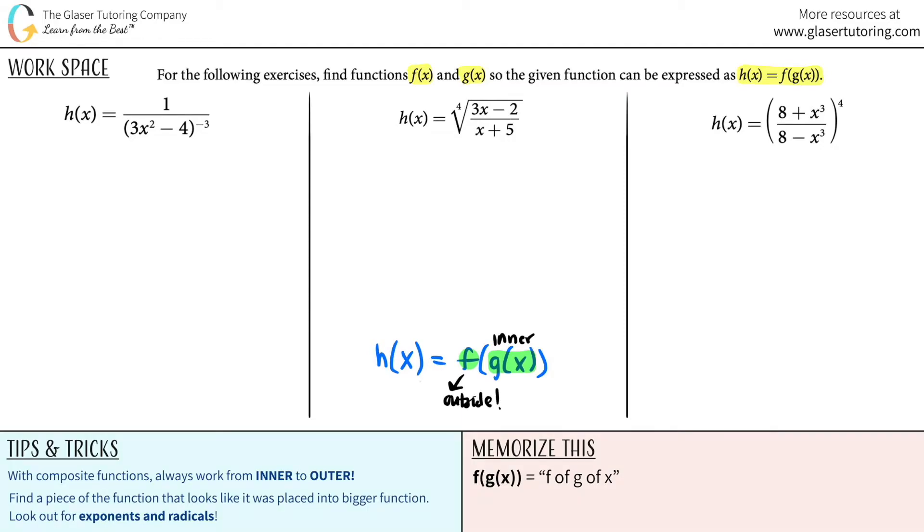When you're trying to make the pieces of the puzzle work, when we're trying to get what f and g are, always work from inner to outer. So to find out what your components were, you're going to find a piece of the function that looks like it was placed into a bigger function. Look out for exponents and radicals, because that's probably going to give you the answer. We always think of some values with x that are trapped or inside other things.